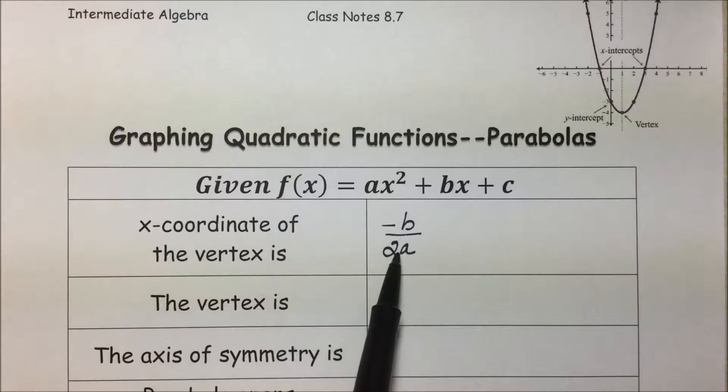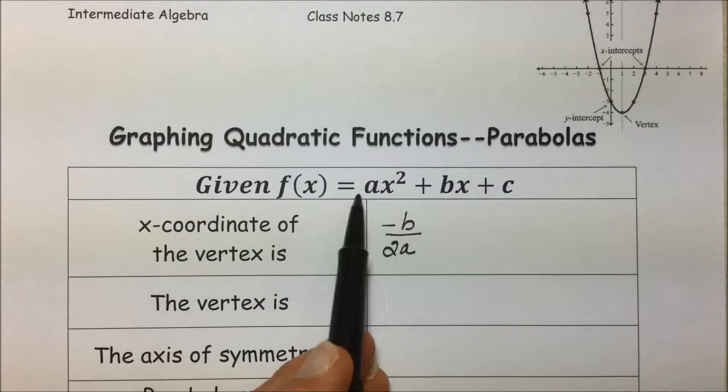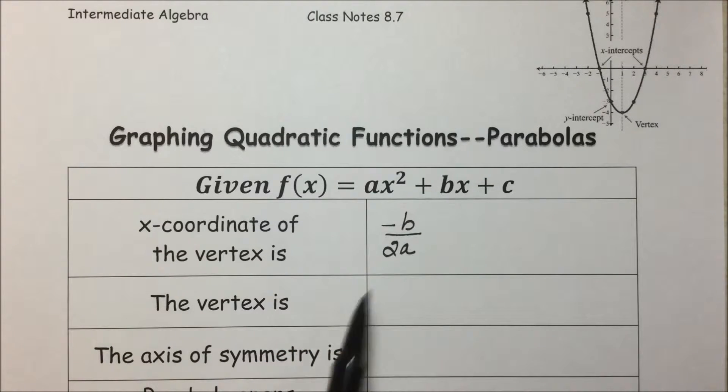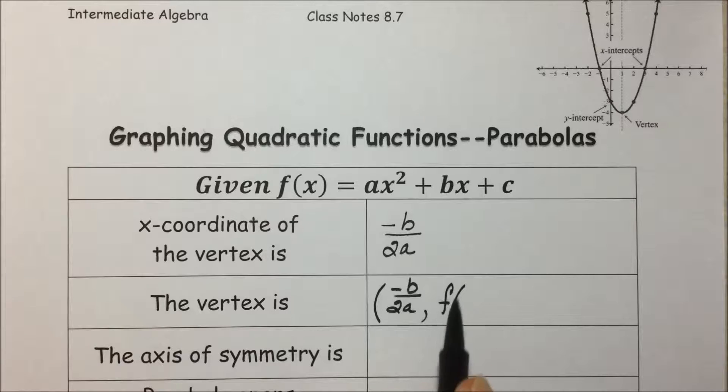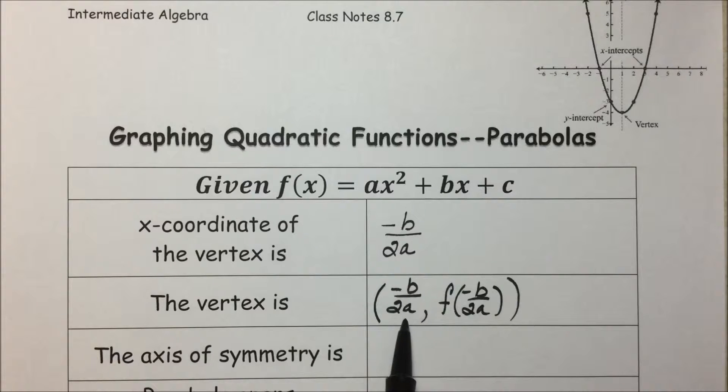Plugging that x value into the function will give us the resulting y value so that our vertex ends up being the ordered pair (-b/2a, f(-b/2a)). This is a cumbersome notation, but we'll look at an example of what that means.